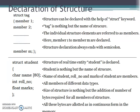Now we'll see how to declare a structure. One part covers the declaration syntax and the remaining part explains an example. The struct keyword is used to declare a structure, followed by the tag — that is, the name of the structure. Between opening and closing curly brackets, different members of different data types can be declared. The structure definition ends with a semicolon.